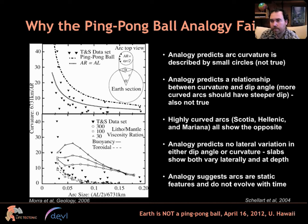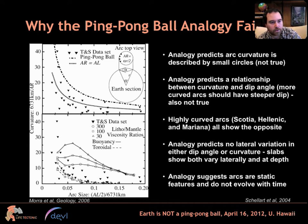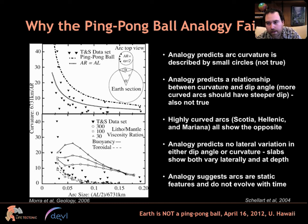There are a number of problems with this. Looking at a graph of curvature against arcuate length, with triangles from a Tovich and Schubert dataset mapping curvature of subduction zones into arc size and curvature parameters, the ping-pong ball analogy predicts a line that systematically overestimates curvature — the actual measurements are systematically underestimated by this analogy throughout Earth.